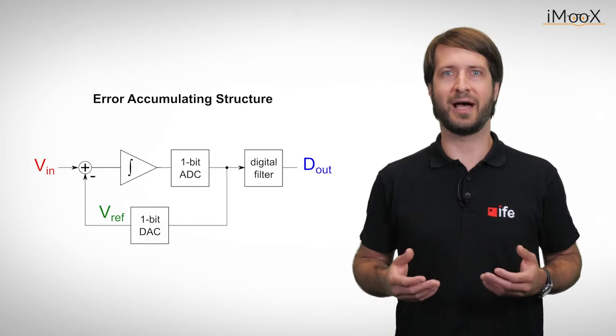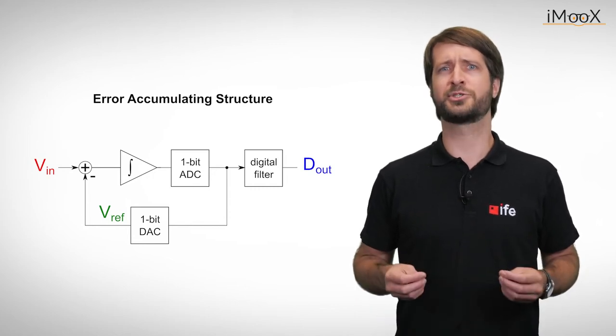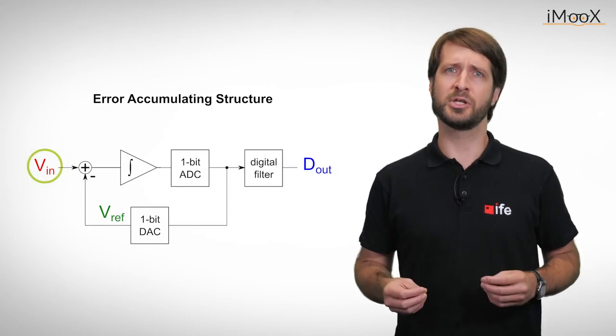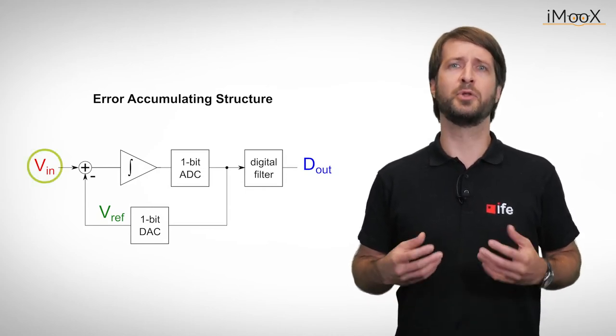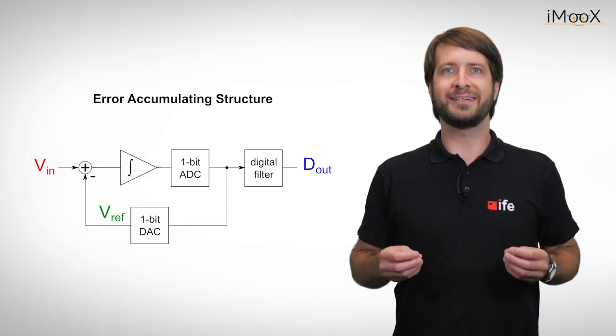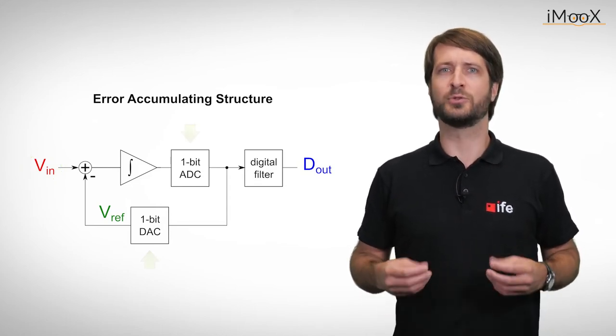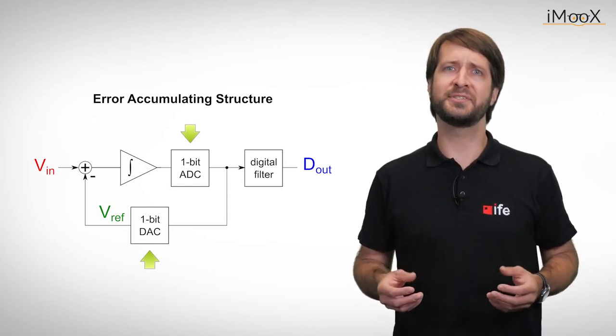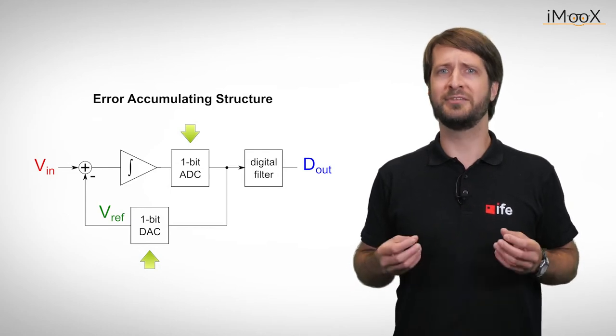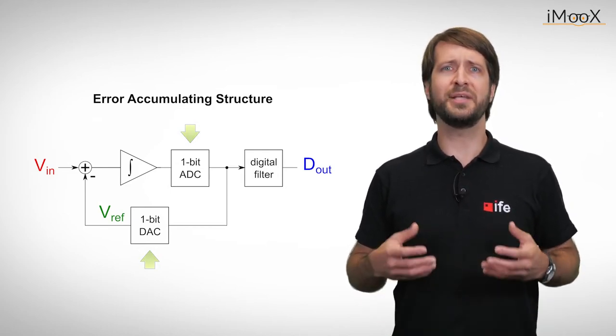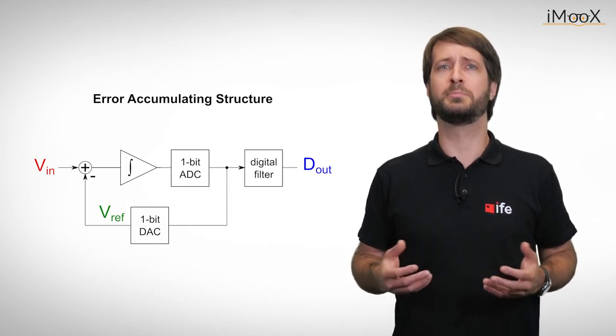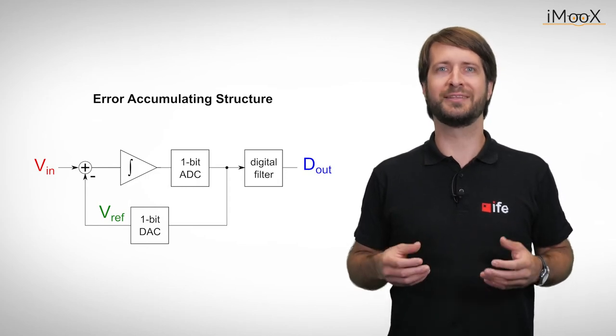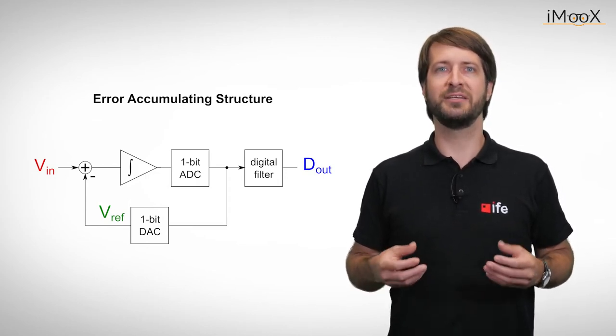Now that we understand the underlying process, some questions may arise. First, we assumed a constant input voltage for our example, which is of course not the normal case. Second, you might ask yourself, how is it that 1-bit conversions, as in this example, achieve the high resolution promised at the beginning with a relatively fast conversion time? To answer these questions, we need to get to know a process called oversampling. To understand it, we will look at the delta-sigma process from a different perspective.